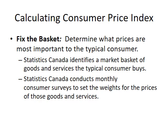To calculate the CPI, you put into the basket what a typical urban consumer would consume. You fix the basket — determining what prices are most important to the typical consumer. Stats Canada identifies the market basket of goods and services the typical consumer buys, and conducts monthly consumer surveys to set the weights for those goods and services. The weights reflect something like a percentage of income — for example, housing is weighted much more heavily because more of your income goes toward that need.